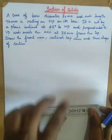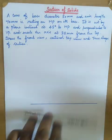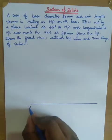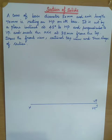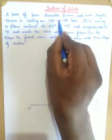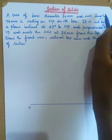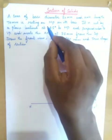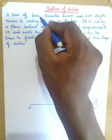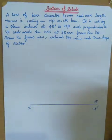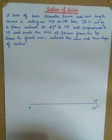First, draw one reference line. Name this line as X and Y. This one is the vertical plane and this one is the horizontal plane. The axis length is 70 mm resting on HP. The front view section is developed in HP and the top view section is in VP. The top view section is a circular image with a 50 mm diameter.